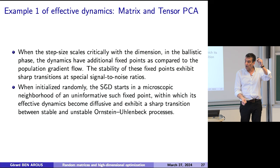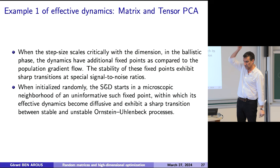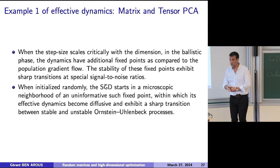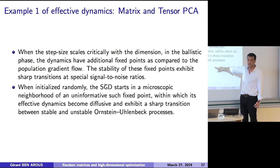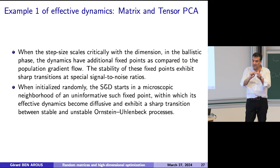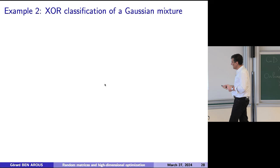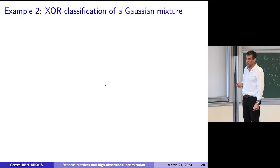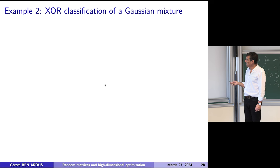When the step size is critical, you find interesting dynamics with many more fixed points. If you start randomly, you start in a microscopic neighborhood of an uninformative fixed point — essentially zero for the latitude — where the effective dynamics become diffusive. Then you have a sharp transition between a stable Ornstein-Uhlenbeck and an unstable Ornstein-Uhlenbeck process. Stable Ornstein-Uhlenbeck means it's like a Brownian motion in a harmonic well. The unstable one has the negative sign, so it just goes to infinity. Which one is good? Unstable — because you are close to the bad point and you want to escape.